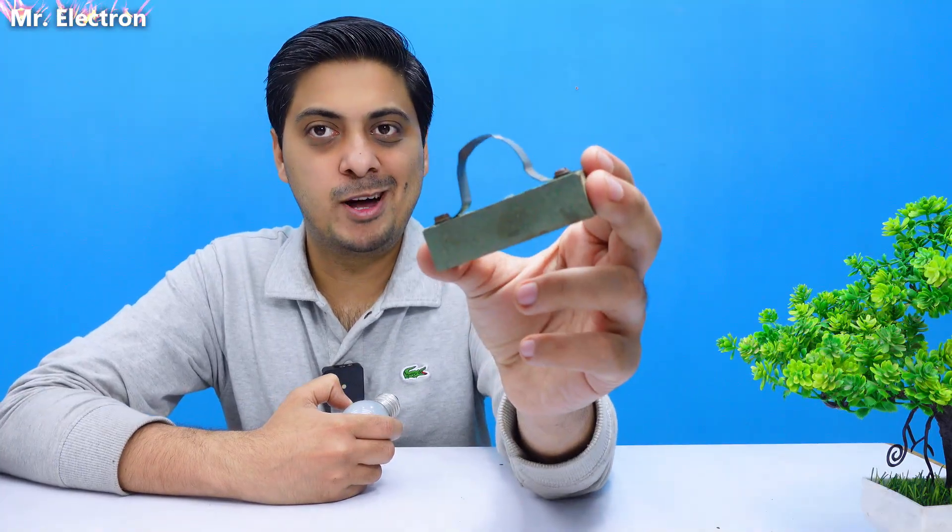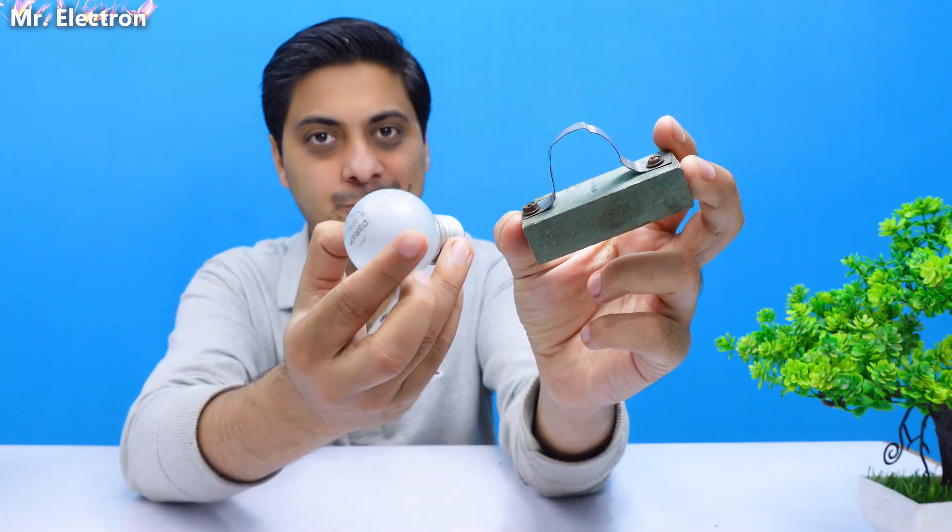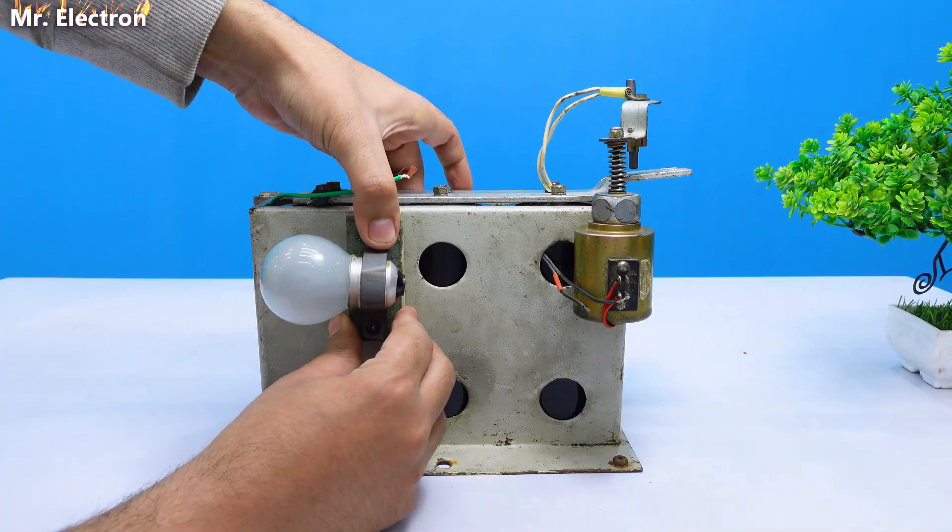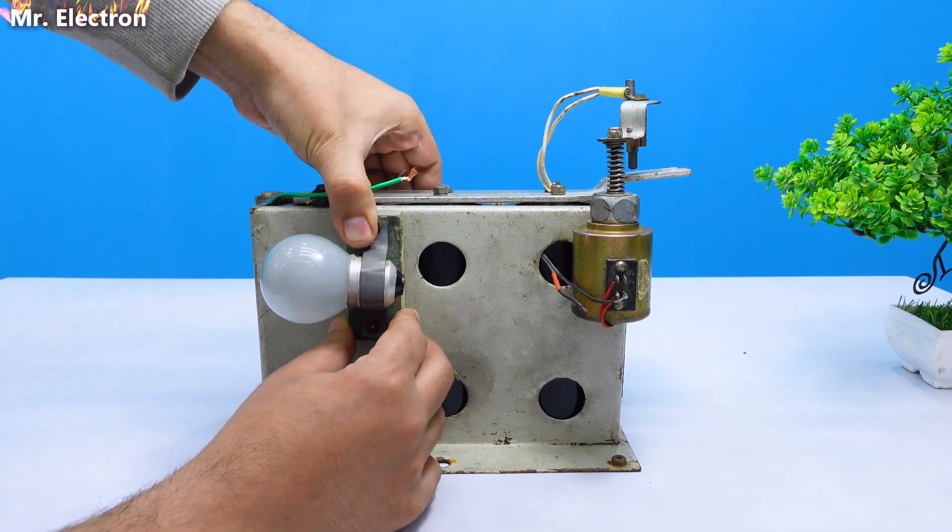Finally, I've made this simple bulb holder. And this is a 220 volts, 60 watts bulb. Next, I'm going to use this double sided tape to stick this bulb as shown.